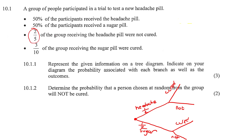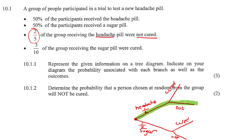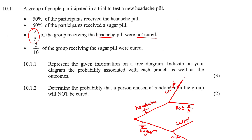Two-fifths of the group who received the headache pill were not cured. So the headache not cured pathway is 2 over 5. Now this branch and this branch are one unit — whenever you have one unit, it always adds up to one. So this would be 3 out of 5.